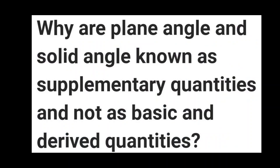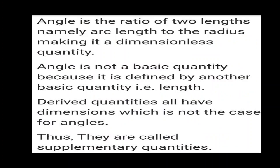Plane angle and solid angle were known as supplementary quantities, but not as base or derived quantities. Why were they not called base or derived? Angle is the ratio of two lengths — arc length to radius — making it dimensionless. It is not a base quantity because it is defined by another base quantity, length. It is not a derived quantity either because derived quantities have dimensions, which is not the case for angles. Thus they were called supplementary quantities.